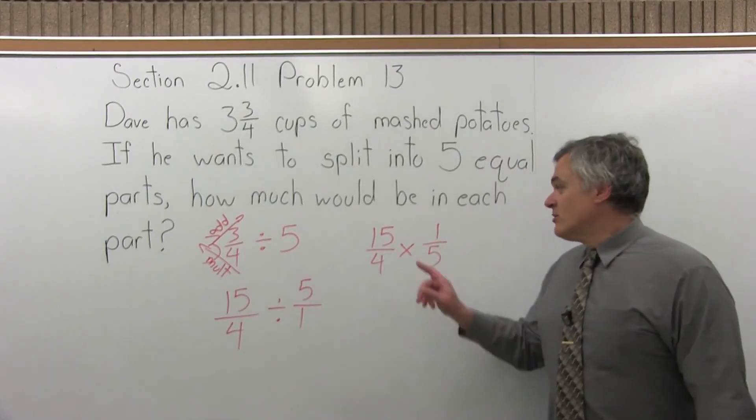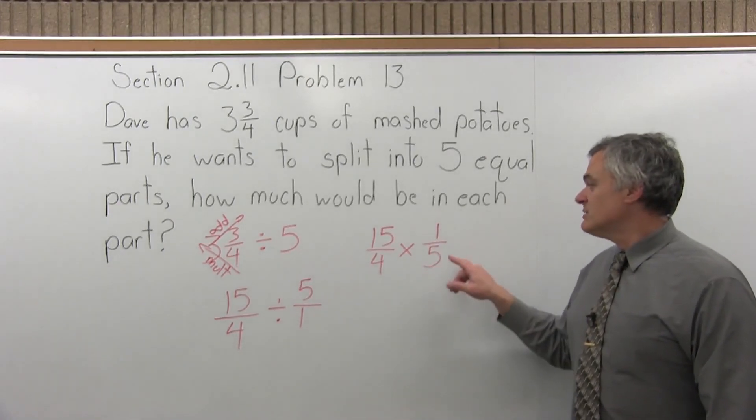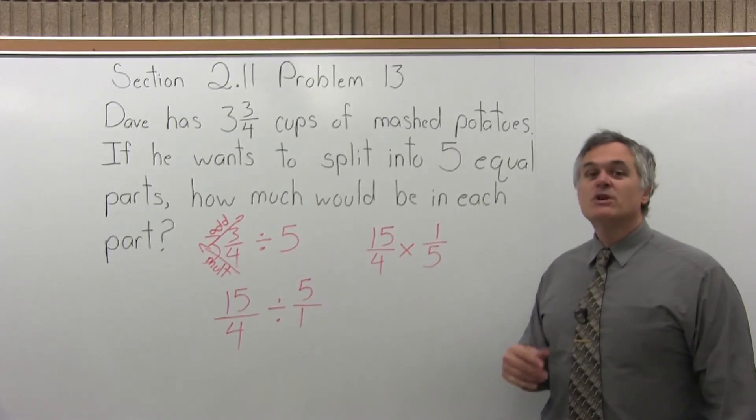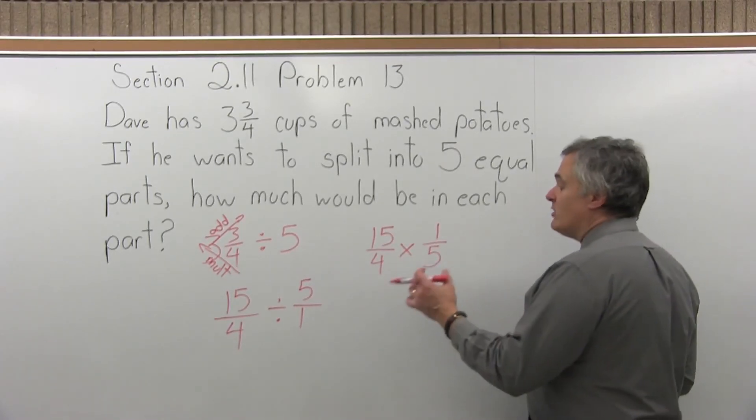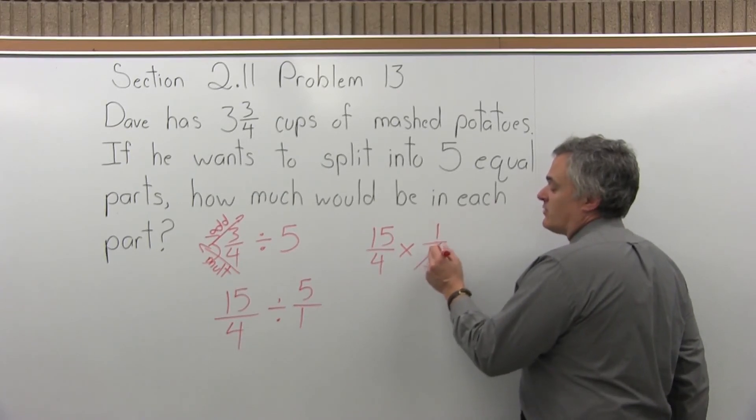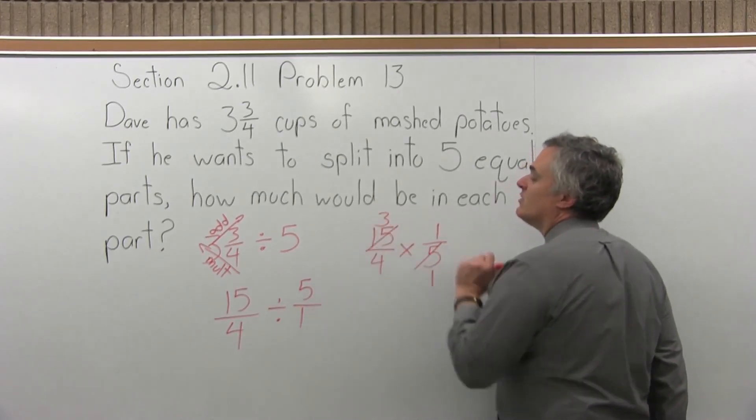Now I can go ahead and multiply numerator times numerator, denominator times denominator, and reduce. And it will reduce pretty nicely. Or if you notice, the five and the fifteen now, you can pre-reduce. And you'll get the same answer either way, but I think it's a little easier if you reduce first. Five goes into five once, five goes into fifteen three times.